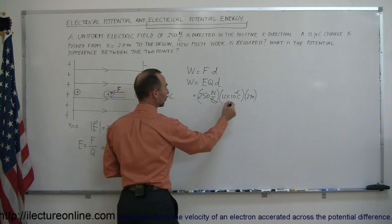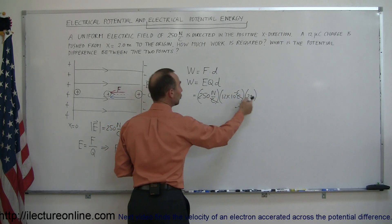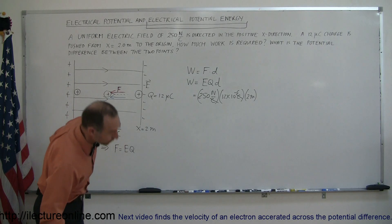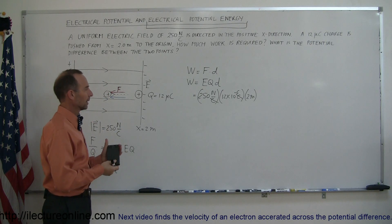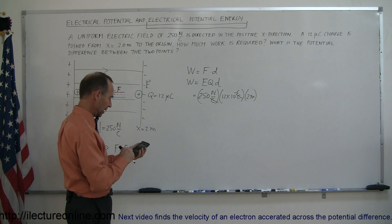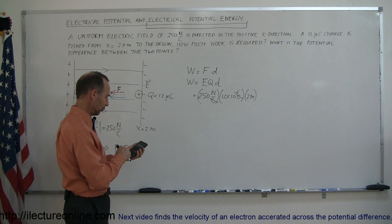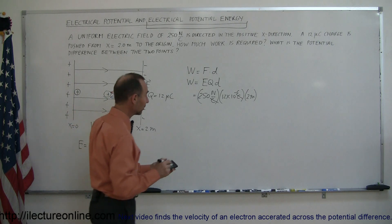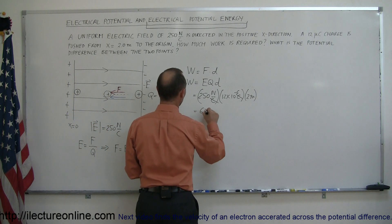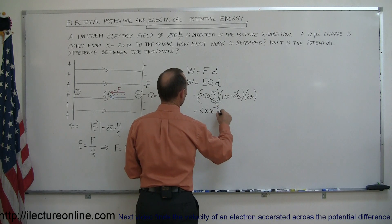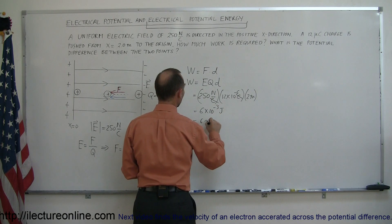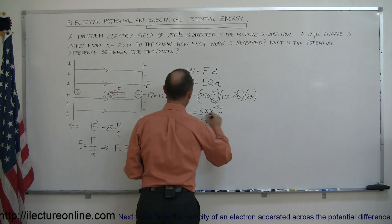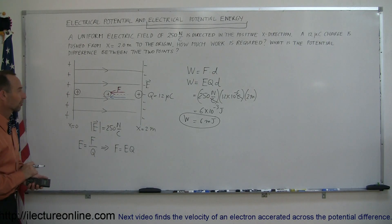And you can see here that the coulombs will cancel out, and we end up with newton meters, and of course the units of newton meters is joules. We now grab our calculator, and let's see how much that is. So we have 250 times 12e to the 6th minus, times 2, and we have 6 times 10 to the minus 3. This is equal to 6 times 10 to the minus 3 joules, or 6 millijoules. And that's the amount of work required to push that charge across the 2 meters to that electric field.